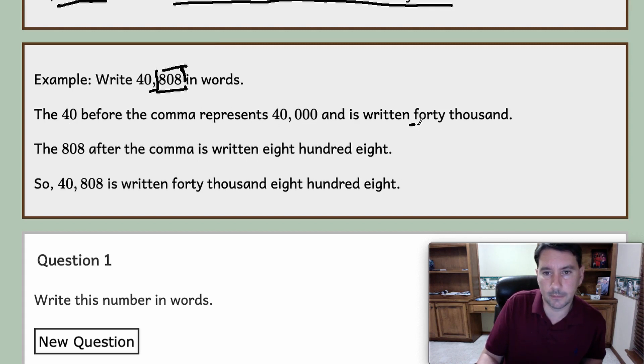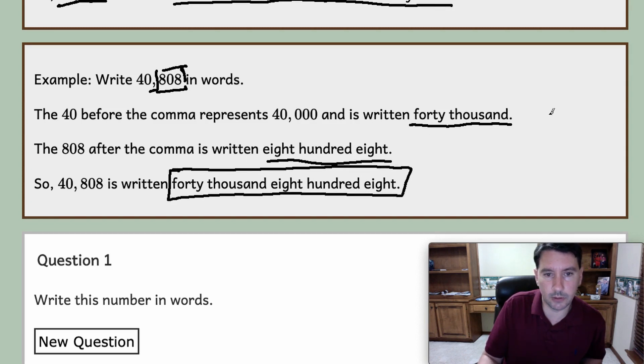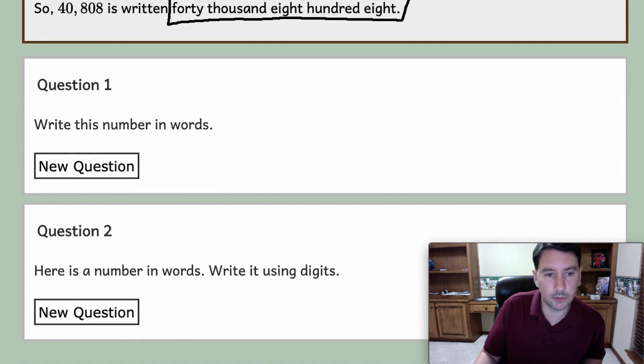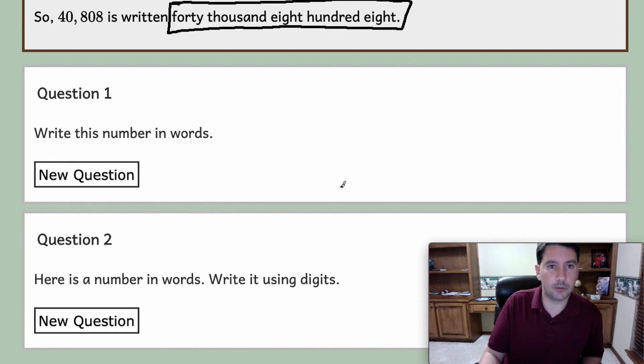Then you read the numbers after the comma which is 808. So 40 represents 40,000 and it's written forty thousand. Then after the comma we have 808, so that's just written eight hundred eight. Therefore 40,808 is written forty thousand eight hundred eight.